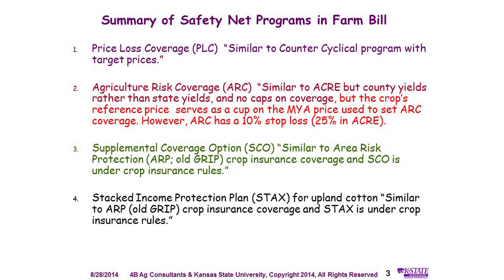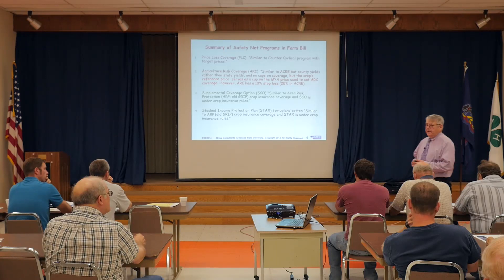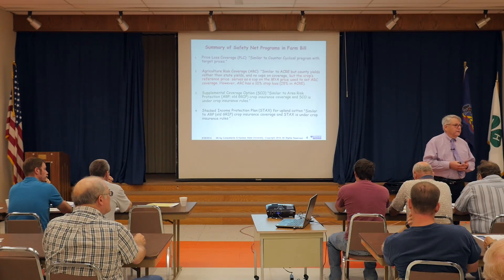First of all is the Price Loss Coverage. This is the simplest of the programs. It's simply a reference price, and if the marketing year average price drops below the reference price, you pay the difference. This is exactly the same design as the Counter Cyclical program, except it's been renamed and they have increased the reference prices over what was the target price.